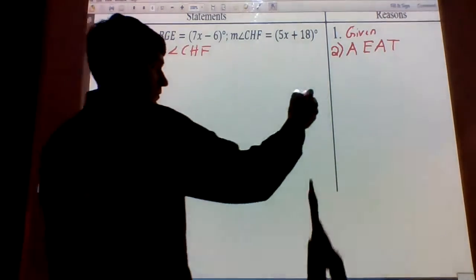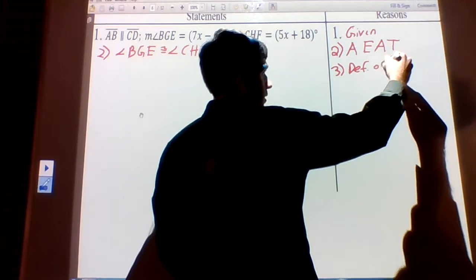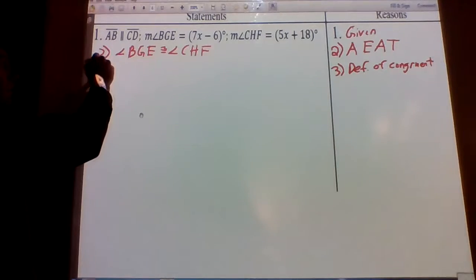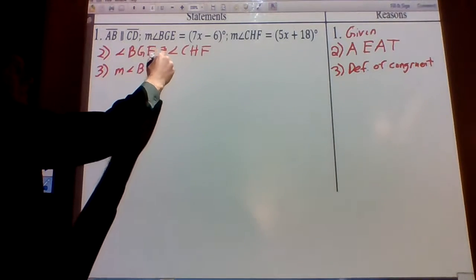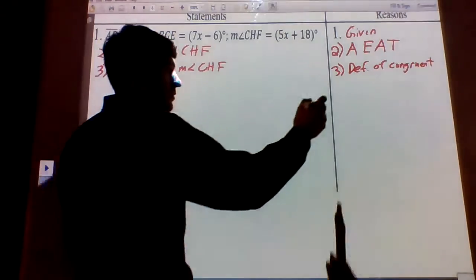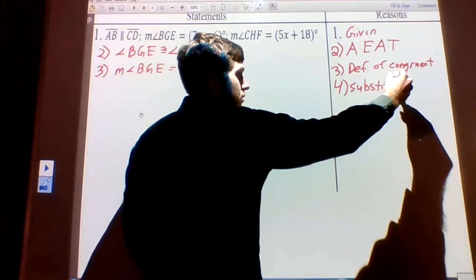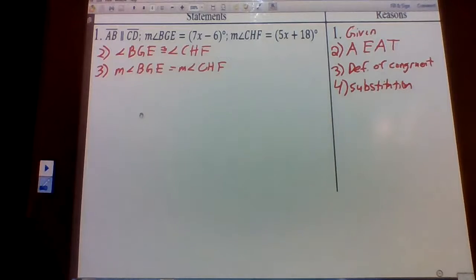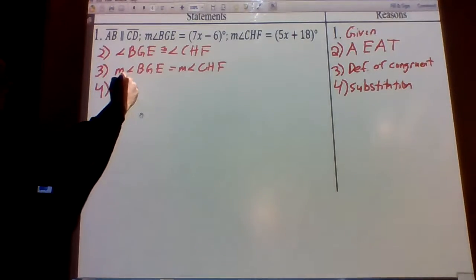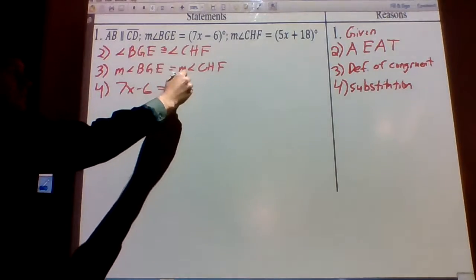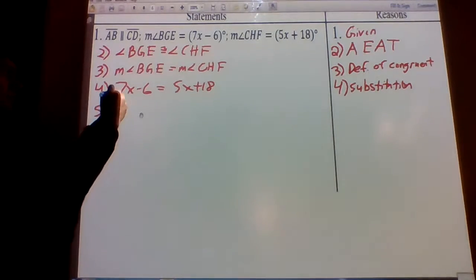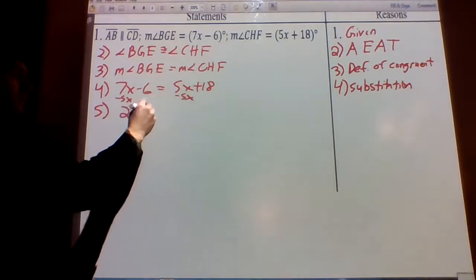We know the definition of congruent means they have the same angle measure. So the measure of angle BGE equals the measure of angle CHF, by the definition of congruence. Then we substitute in using substitution: the measure of angle BGE is 7x minus 6, and the measure of angle CHF is 5x plus 18. Now we do our algebra: subtract 5x from both sides — subtraction property of equality — to get 2x minus 6 equals 18.